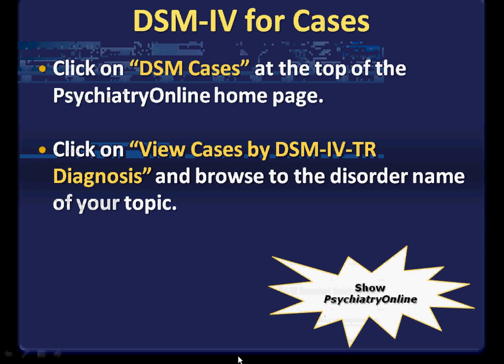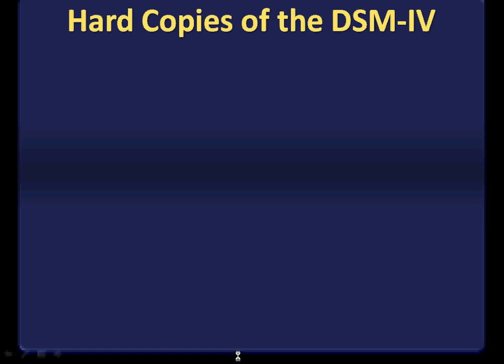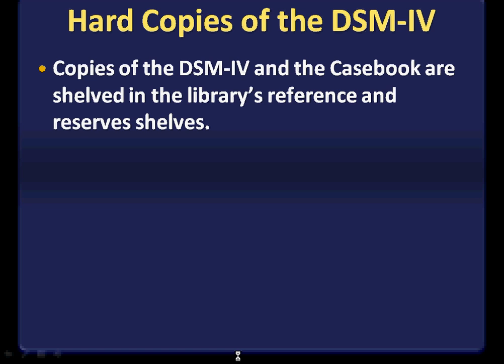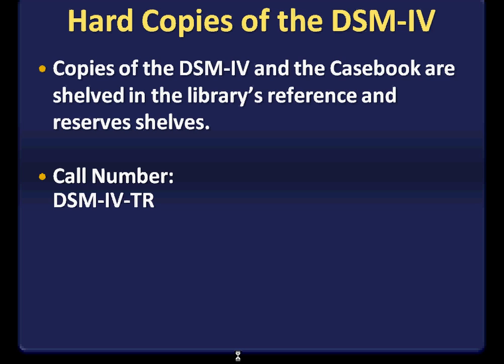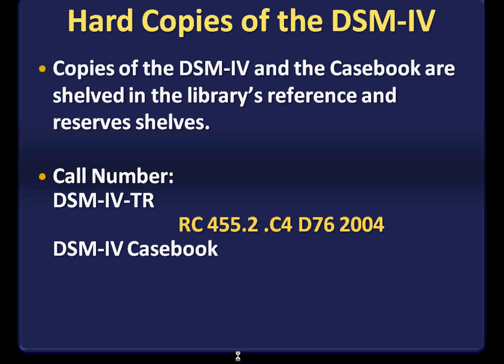We do have hard copies of the DSM books in the library, both at the reference section that you can retrieve yourself and use in the library, or you can come up to the reserves desk and ask for copies behind the library desk that can be checked out and used in the library for two hours. Both copies you would have to make copies from using money on your MAC card. The call numbers are listed here — for the DSM-IV-TR, here are the call numbers for both the reference and reserves location, and for the case book, here is the call number for the reference or reserve shelves.